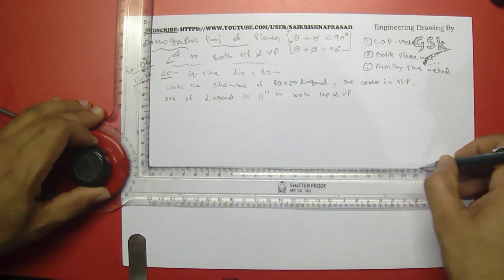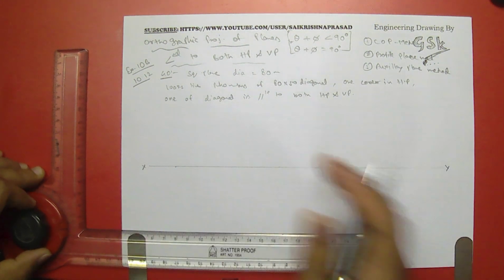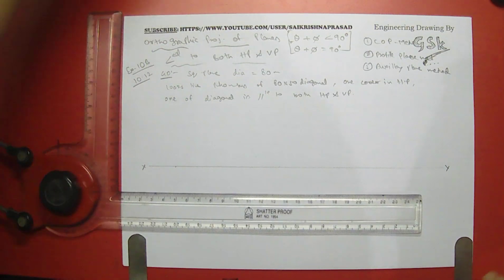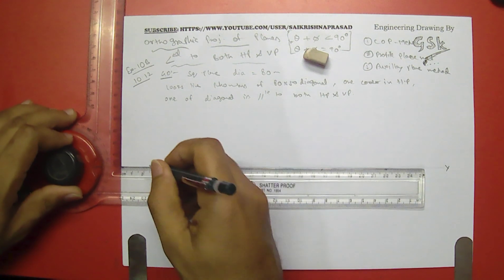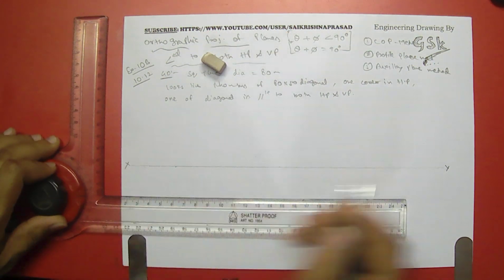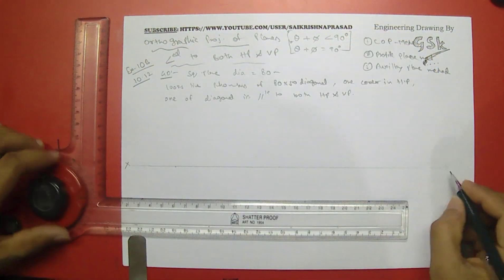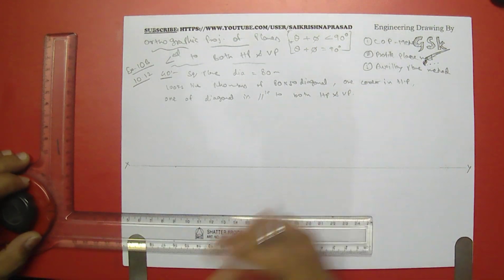I am drawing a long reference line because we have to go through several stages of the problem. Let me extend this line as well, because we will be getting three stages for this problem. In the change of position method we need multiple stages, whereas in the profile plane method and auxiliary method we can eliminate some stages and get the final solution more directly. The final solution appears as a rhombus.